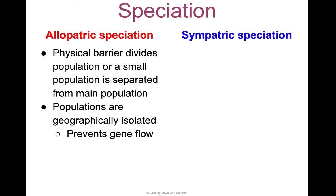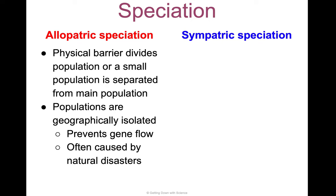Allopatric speciation prevents gene flow — there's no gene flow going from one population of species to the next. It's often caused by natural disasters, but there are other reasons for it as well.